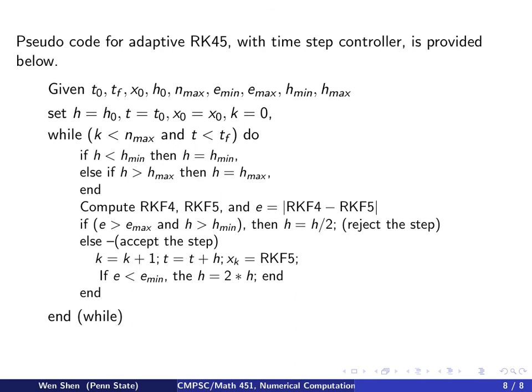I add the counter: k becomes k plus 1, t becomes t plus h to keep track of the time, and I set x_k to be the fifth order Runge-Kutta-Fehlberg, which is the better answer. There is an additional if test: if the error is less than e_min, the error is really small, so I probably don't have to take such a small time step. Then I double the time step. I end the if test and end the while loop. This algorithm will automatically adjust the step size to guarantee that at every iteration the local error is within the tolerance.